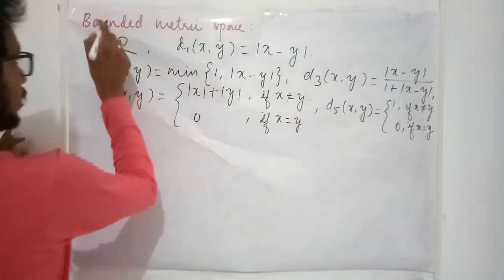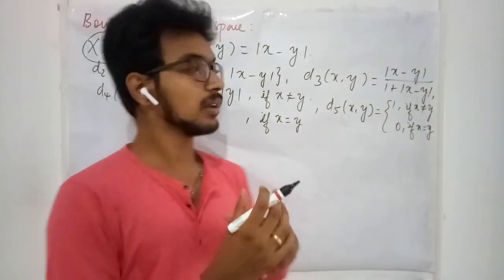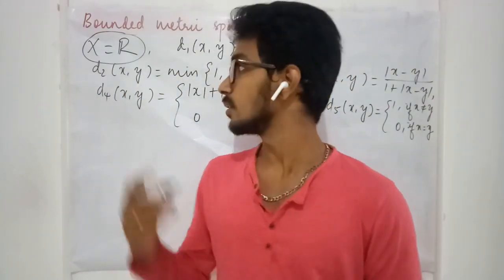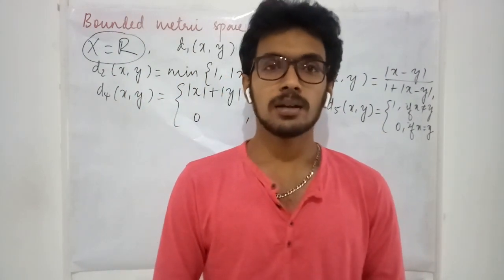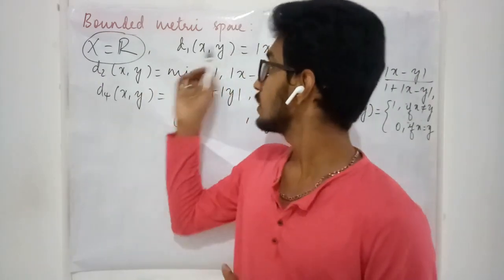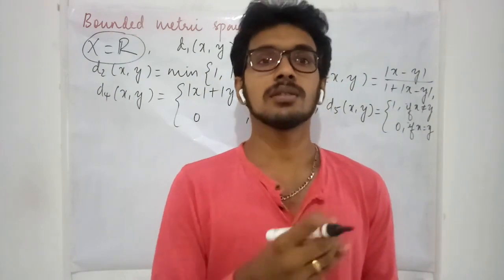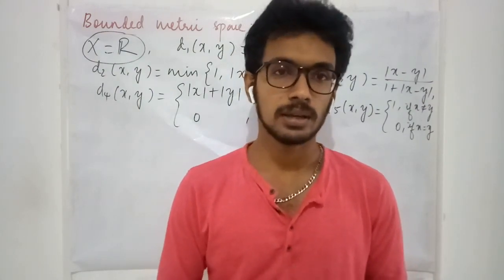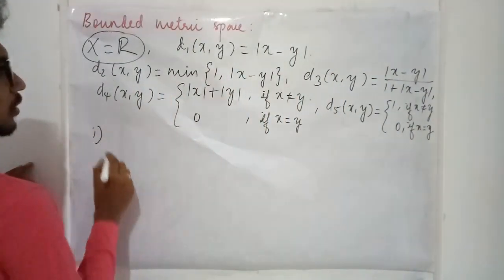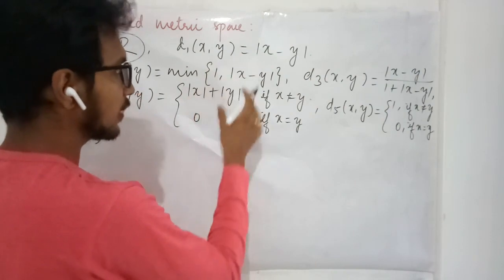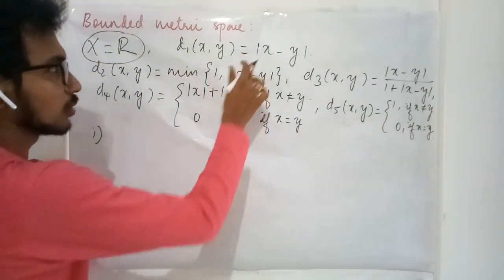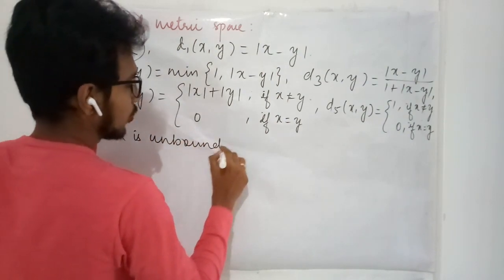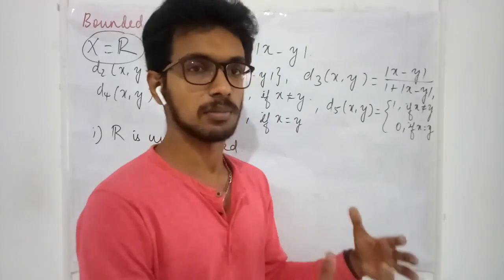Generally from schooling we have seen that the set of all real numbers is unbounded, and we dealt with that using the standard Euclidean metric — though we were not explicitly told so. Under the first metric d1 = |x − y|, you are not able to find some M satisfying the boundedness condition, so under this metric R is unbounded.